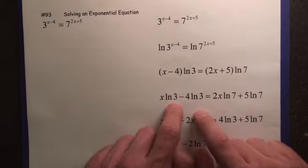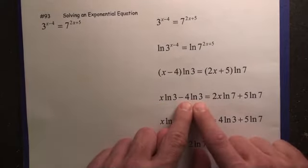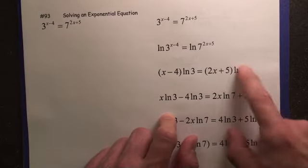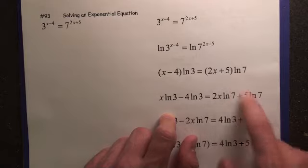Now we're going to distribute the ln 3. So you're going to have x ln 3 for ln 3. When you distribute it, it's going to be a minus in the middle. Distribute the ln 7, 2x times ln 7, and 5 times ln 7.